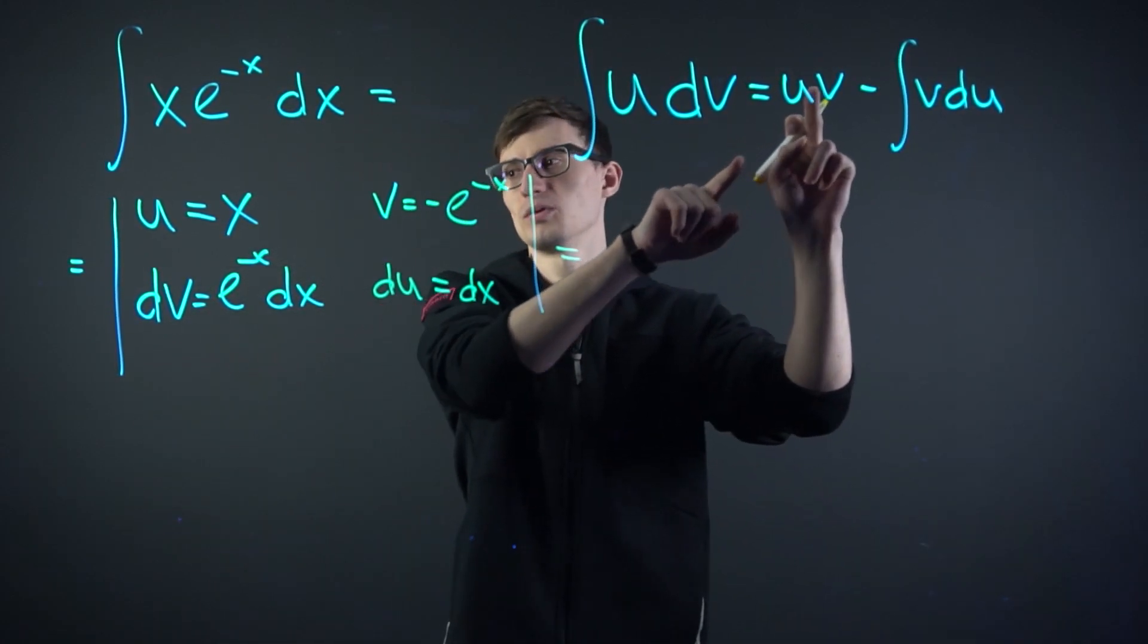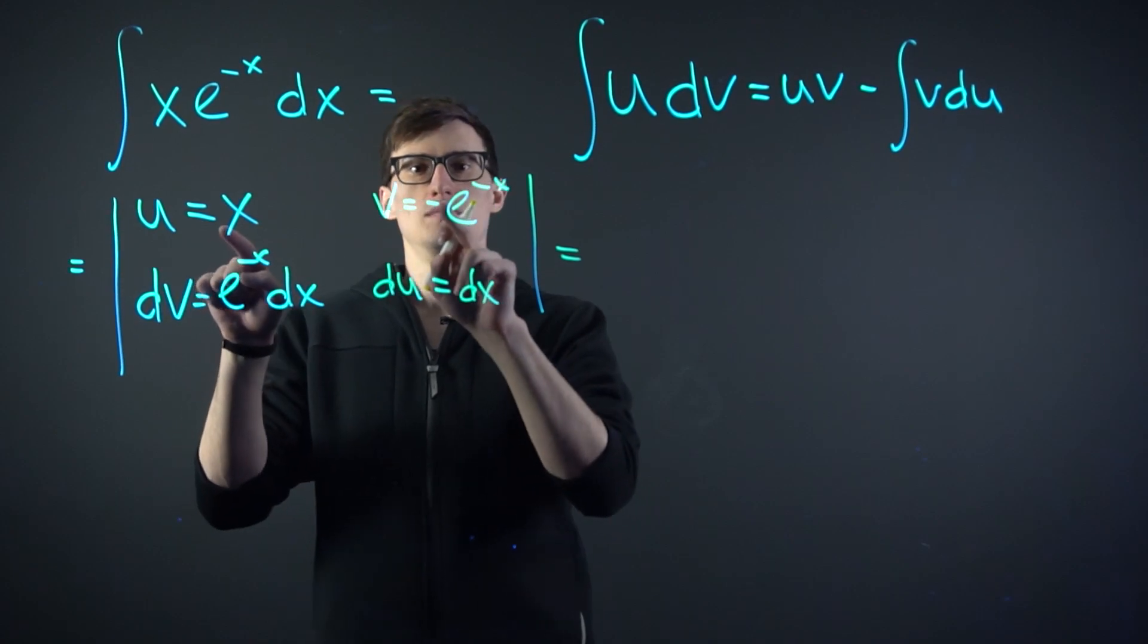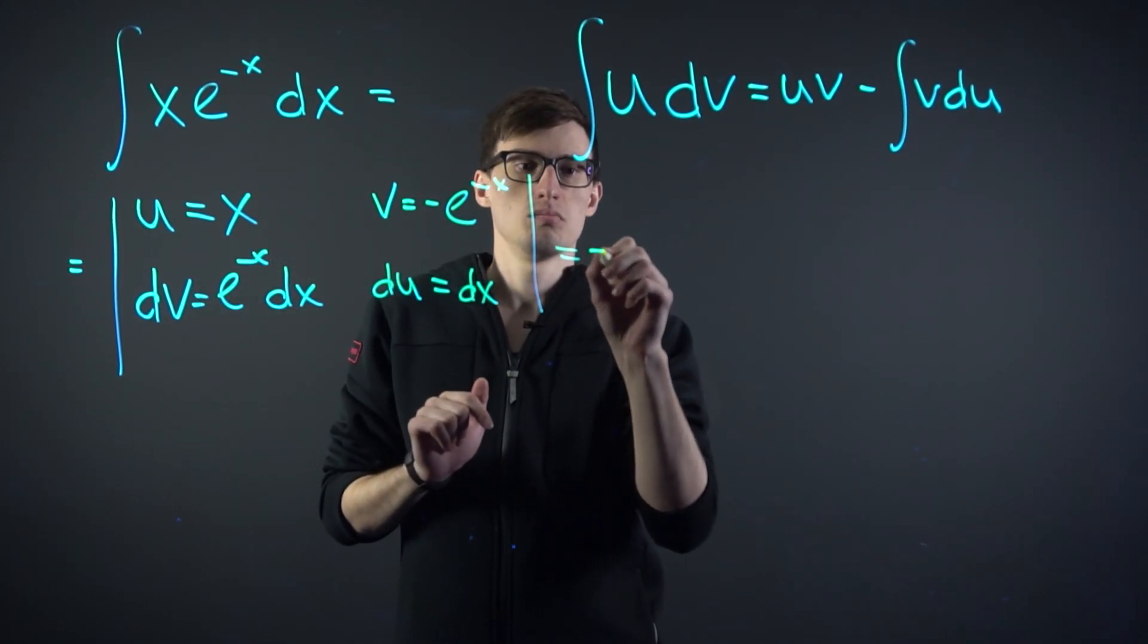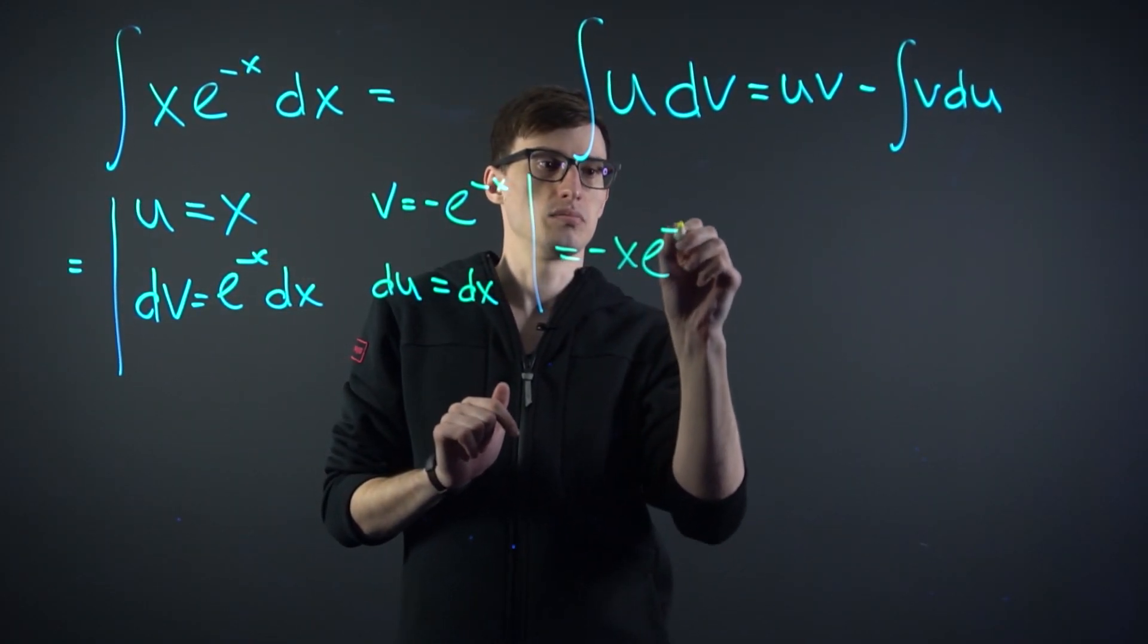According to this formula, we have to multiply uv, so x times minus e to the x, minus x e to the minus x,